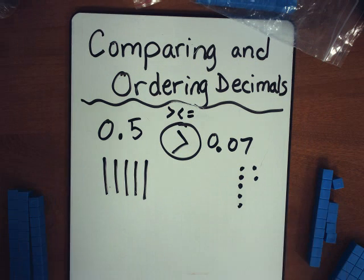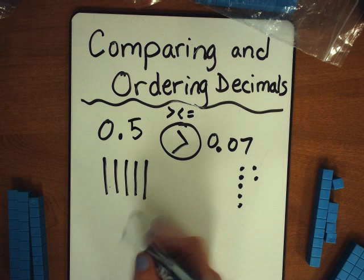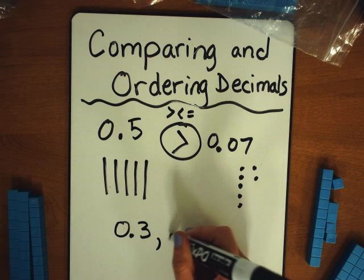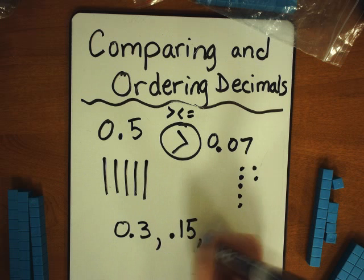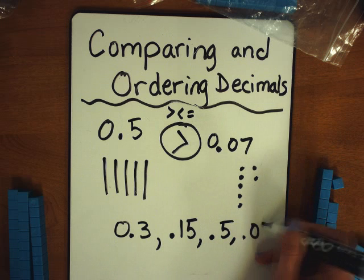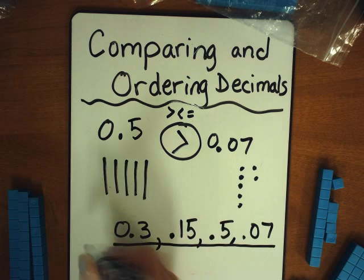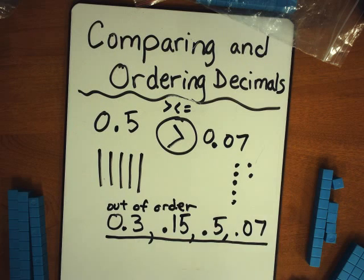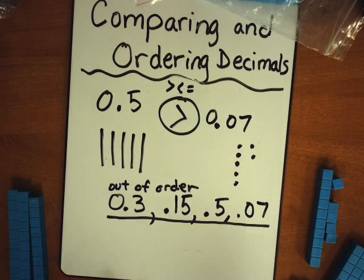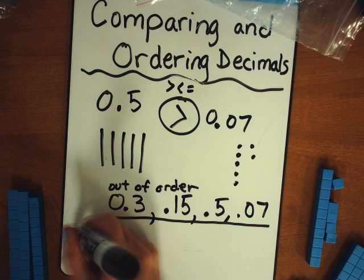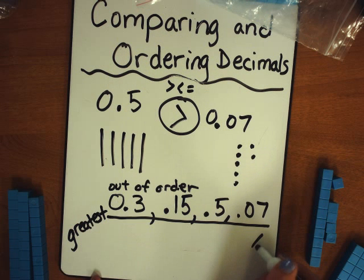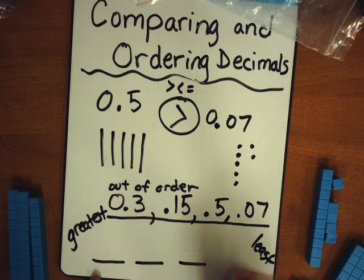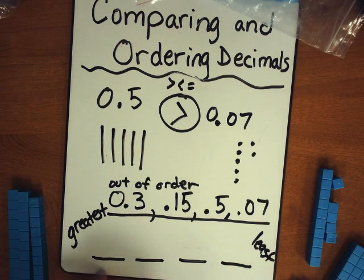So one last task, friends. Last time we had three tenths and we had fifteen hundredths, and now we've got five tenths and seven hundredths. Go ahead and write the list of those out of order, and then I want you to use those strategies and write them below that in order from biggest, greatest, to least. So I've got one, two, three, four of them — write them in order from greatest to least.